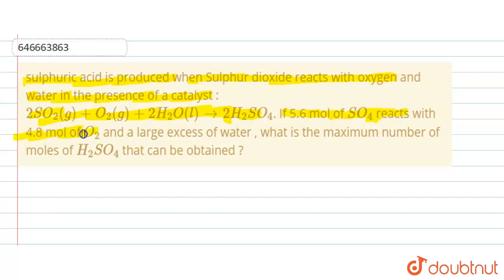reacts with 4.8 moles of O2 and a large excess of water, what is the maximum number of moles of H2SO4 that can be obtained? If we write the reaction, so here it is 2SO2 gas plus O2